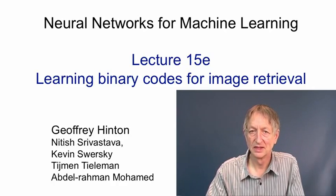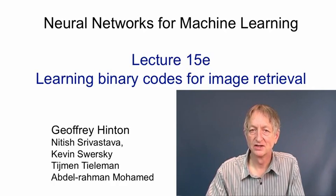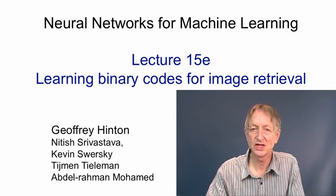In this video, I'm going to talk about the use of binary codes for image retrieval. For retrieving documents, people like Google have such good methods already that techniques like semantic hashing may not be of much value. But retrieving images is much more difficult, and methods that convert an image into a fairly large binary code of, say, 256 bits, seem to work quite well.